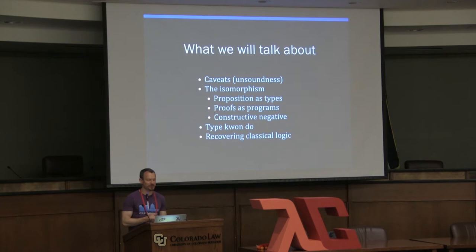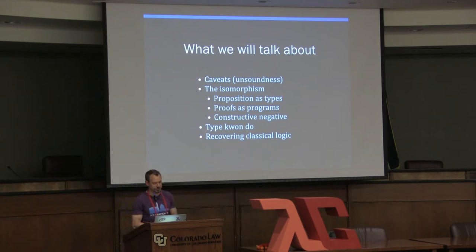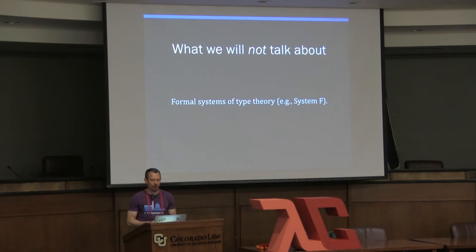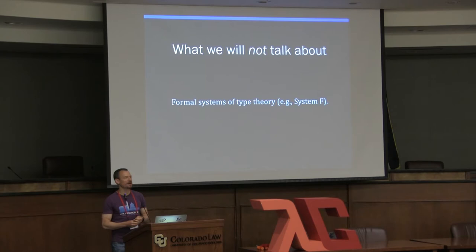Here's what we're going to cover: some caveats having to do with unsoundness, then we'll dive into the isomorphism itself — propositions as types, proofs as programs — extend it with constructive negation, do some 'type kwon do' practicing with Haskell types to build intuition, and even see how we can recover classical logic within Haskell. We will not be getting into formal type theory systems like System F.